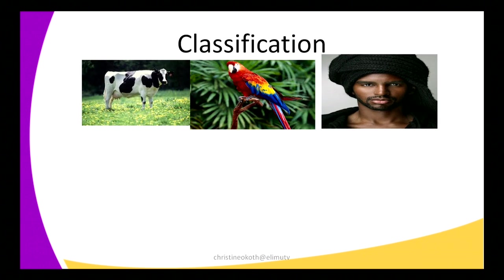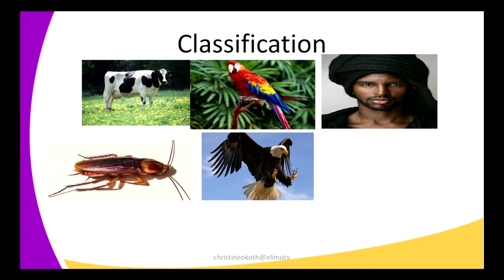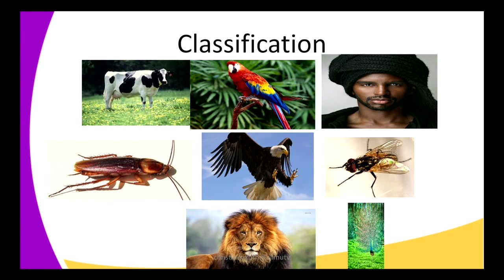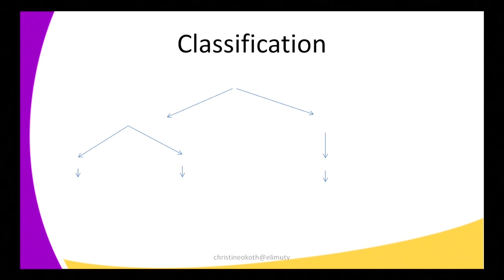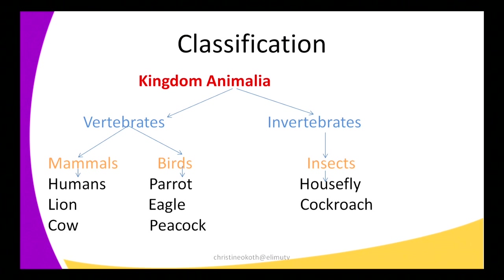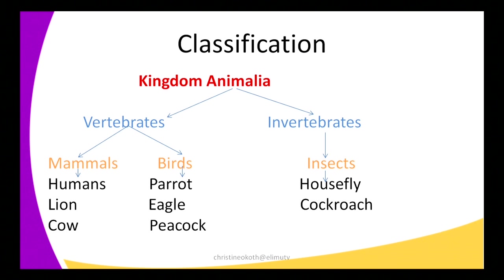So these are the organisms we are going to classify by looking at their structure and how they live. By classifying them, all these organisms belong to the big kingdom we call Animalia because all of them are animals — they are not plants. They cannot make their own food and they do not have the green colouring in plants we call chlorophyll. So this is one thing that makes them classified under the kingdom Animalia.